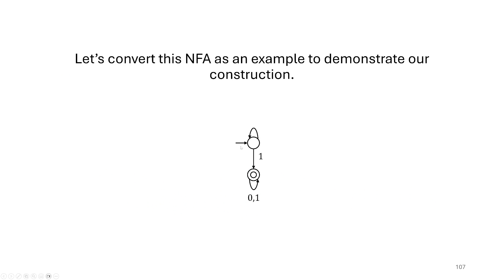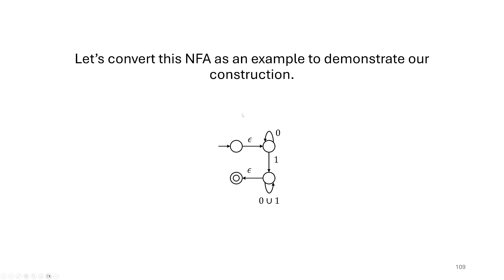Let's take our machine and change it. The original machine has a start state with an incoming transition and an accept state with an outgoing transition. To convert it to GNFA form, we extract the start and accept state and make them their own special states. I've made a new start state with an epsilon transition to the old start state, and a new accept state with an epsilon transition from the old accept state. The functionality is maintained — it still accepts the same strings — but now the GNFA conditions are satisfied.